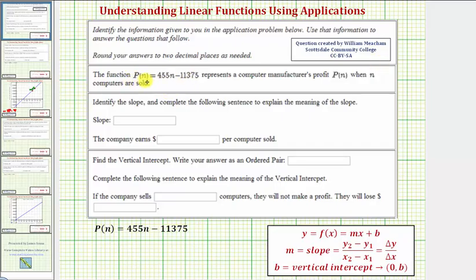Notice how the linear function is in slope-intercept form. A function is in slope-intercept form if it's in the form of f of x equals mx plus b. And because we have a function of n, slope-intercept form would be p of n equals mn plus b, where m is the slope and b is the vertical intercept.